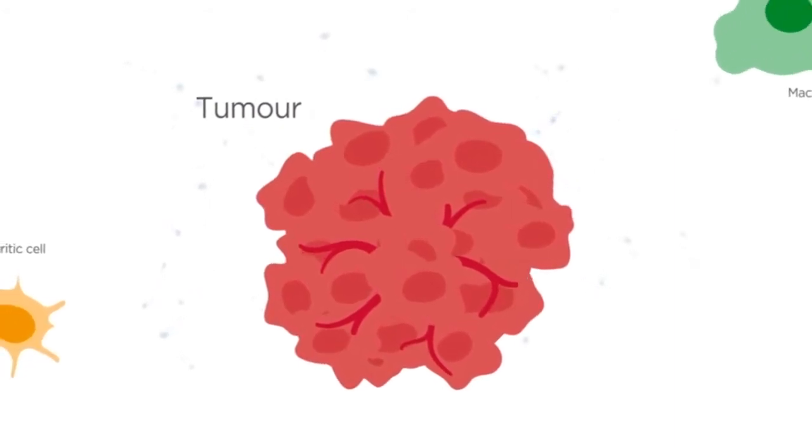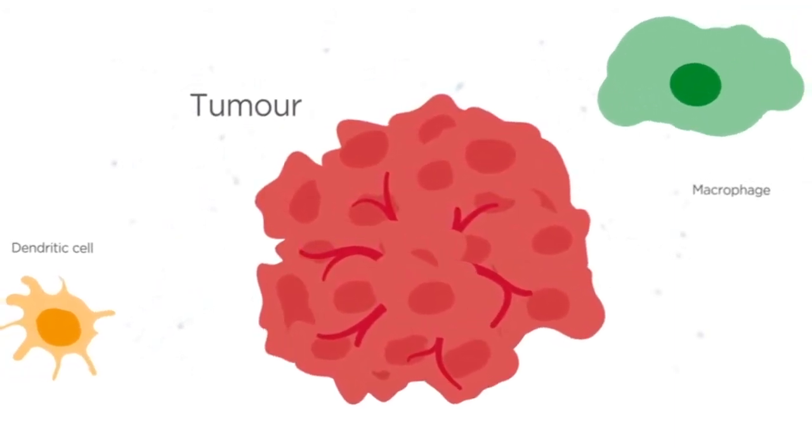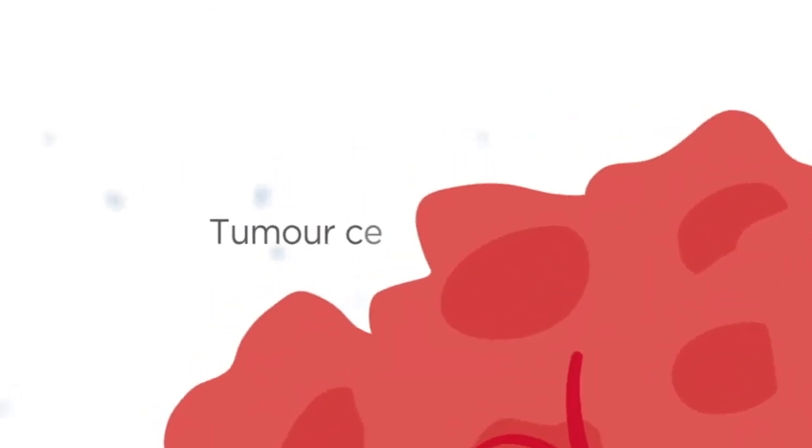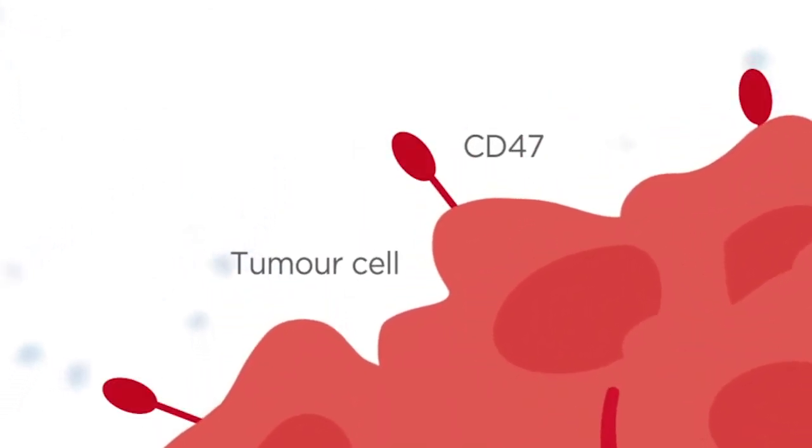One strategy that tumour cells employ to evade immune surveillance and grow unchecked is through the upregulation of CD47, a protein located on the tumour cell surface.